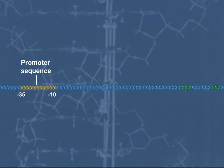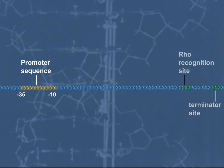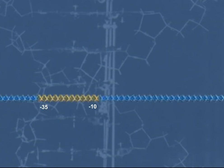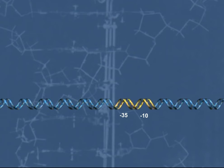Transcription is initiated just beyond the yellow promoter region and is terminated at the green terminator site. The sequence of the promoter at positions -35 and -10 nucleotides upstream from the transcription start site are critical to initiating transcription.